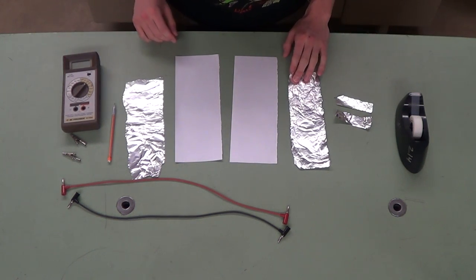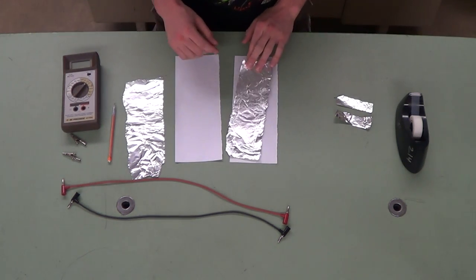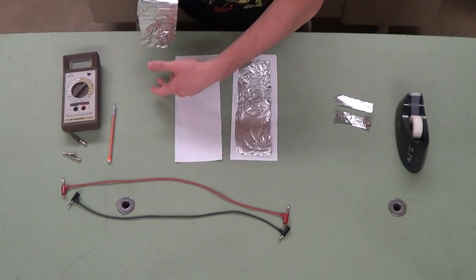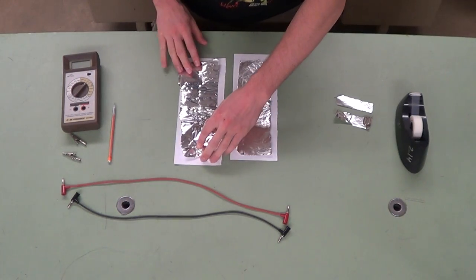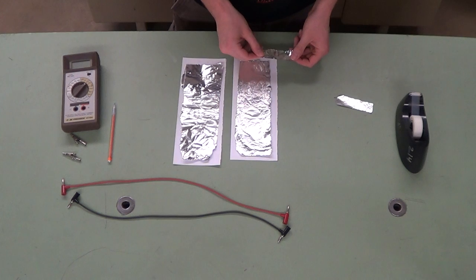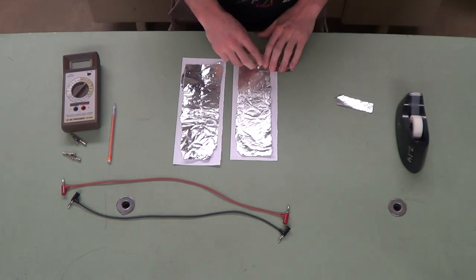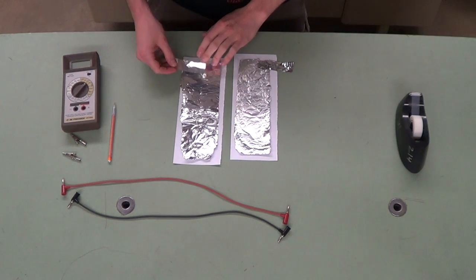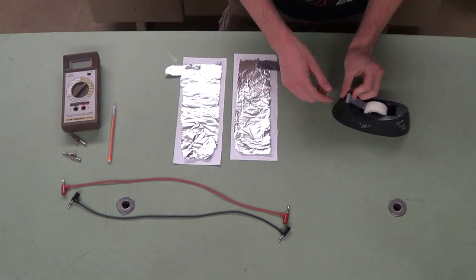The first thing that we're going to do is place the aluminum foil on top of the paper. I've already cut it to the correct size for both strips. The next thing that we'll do is place the tabs of aluminum foil on top. This will allow us to access these larger strips later, and then we'll tape that in place.